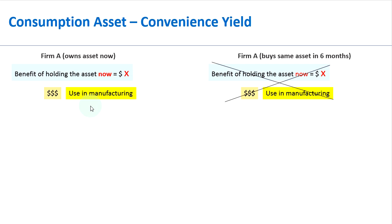That's something very important and very unique for consumption assets, which is not the case for investment assets. Consumption assets, when you hold them now, there is a particular benefit which is not available in the futures contract, because the futures contract is for the future. So you lose the benefit of holding the asset now.